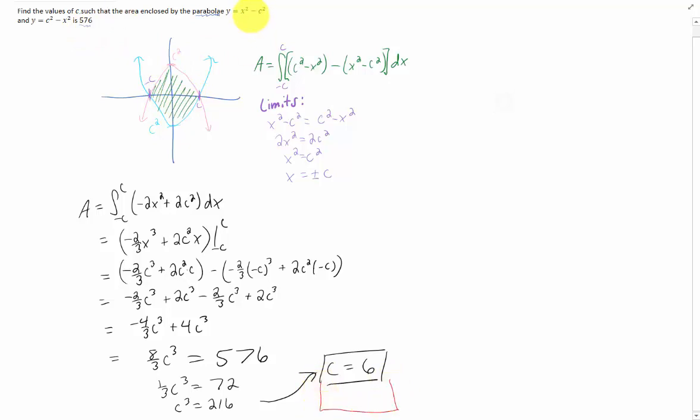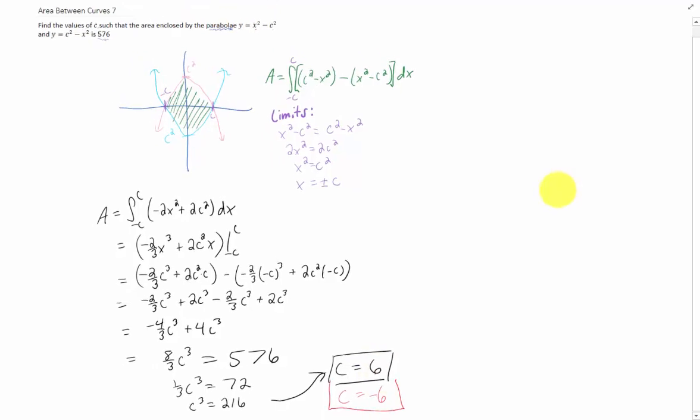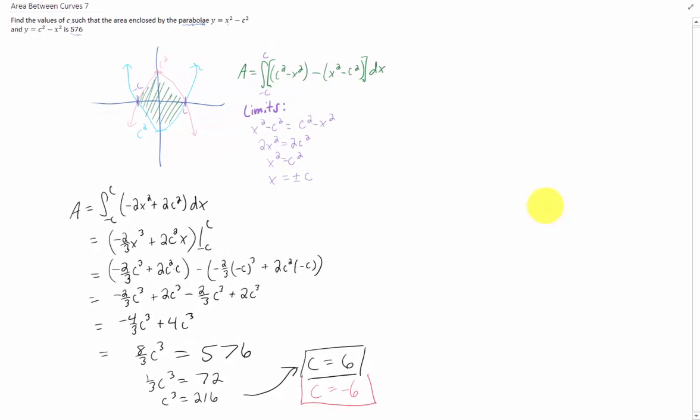You'll notice that we would get the same parabolas, X squared minus 36 and 36 minus X squared, if C itself was negative six. So while C could be six, C could also be negative six. That would give us the same parabolas in the original problem, and we should get the same area between those two parabolas. So technically, we have two answers to this problem. And now we are finished.